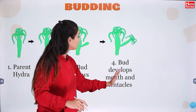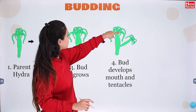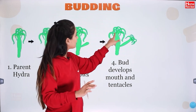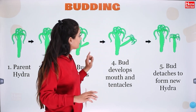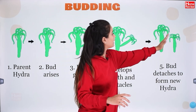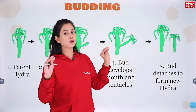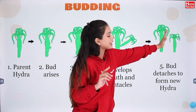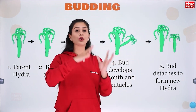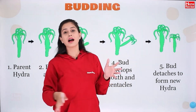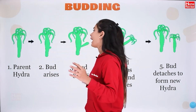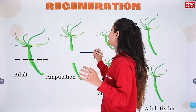The bud develops a mouth and tentacles. This is shown here — the body part and tentacles. Then the bud detaches to form a new hydra. When its tentacles grow, it detaches itself to form a new hydra, and then grows. This is how the process of budding continues, and their species carries on.